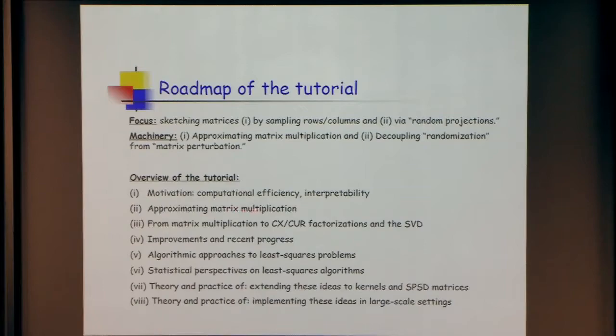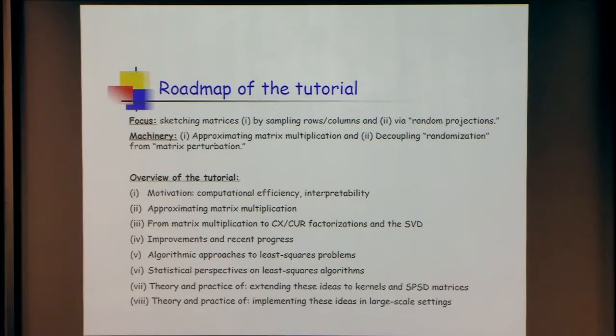Petros covered the first four topics: motivation, matrix multiplication, CX, CUR, projection, low-rank approximations, and a range of other things. I'll continue with a few general ideas and then talk about least squares — a very simple example of over-constrained least squares, no regularization, no fat matrix. This is an algorithmic perspective: here's the data, chew on it, call your black box and get an answer.